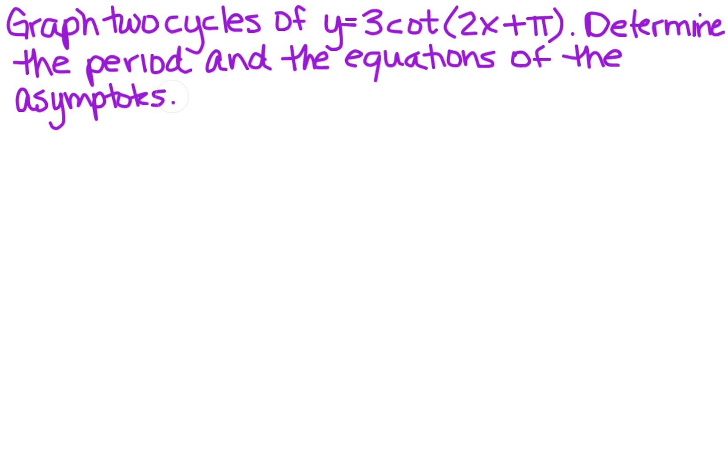We want to graph two cycles of y equals 3 cotangent of 2x plus pi, and then we need to determine the period and the equations of the asymptotes. So how are we going to do that?